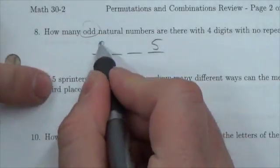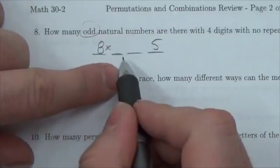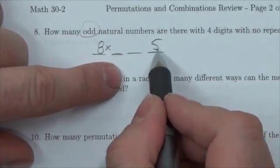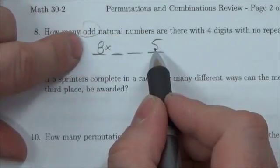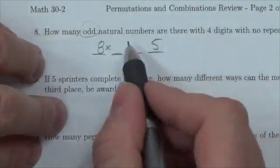Now this second position here could be zero. What are the restrictions on this one? Well, it can't be this, whatever I chose here, and it can't be whatever I chose here. So there are two digits it can't be. Again, there were ten to choose from, so again that puts us at eight.